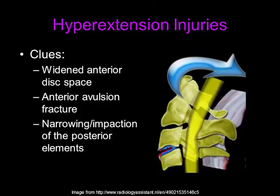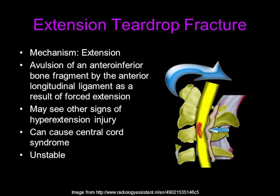Now we'll move on to hyperextension injuries. The clues to a hyperextension injury are widened anterior disc spaces, an anterior avulsion fracture of a vertebral body, and narrowing or impaction of the posterior element. An extension teardrop fracture is a type of unstable injury that occurs with extension. It is an avulsion of the anteroinferior vertebral body by the anterior longitudinal ligament, as a result of forced extension. You may also see other signs of hyperextension injury, and it can cause central cord syndrome.